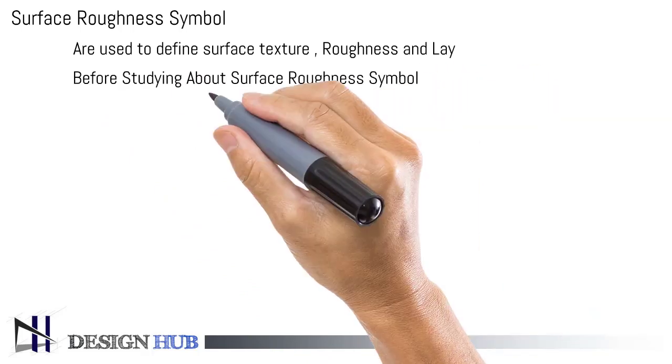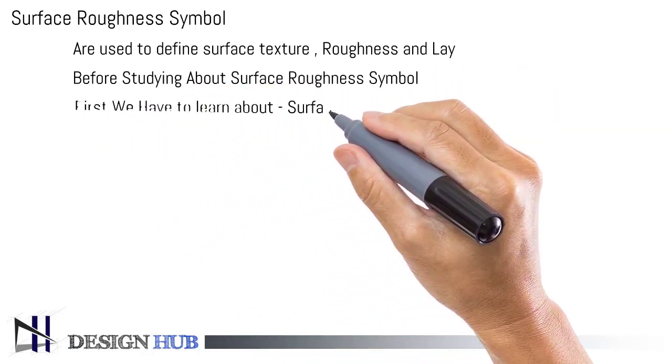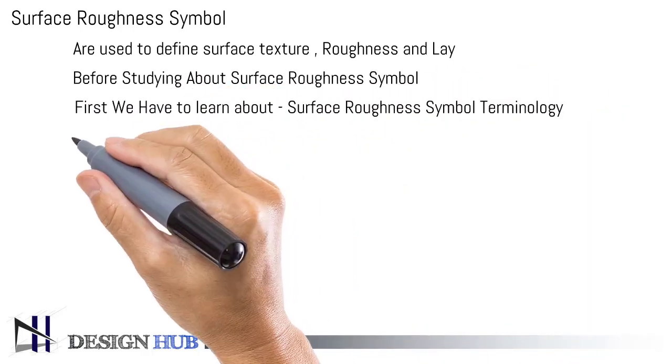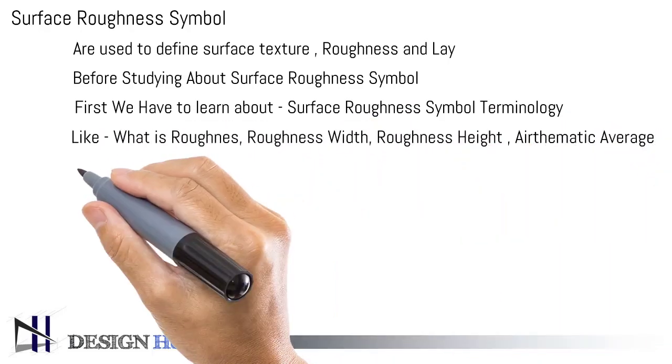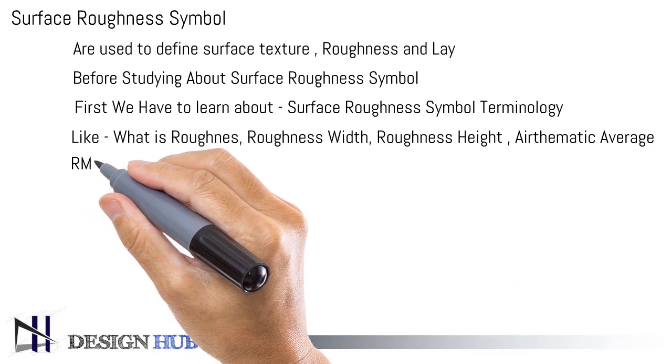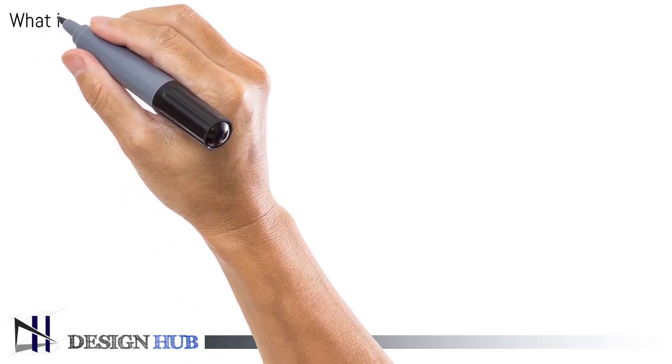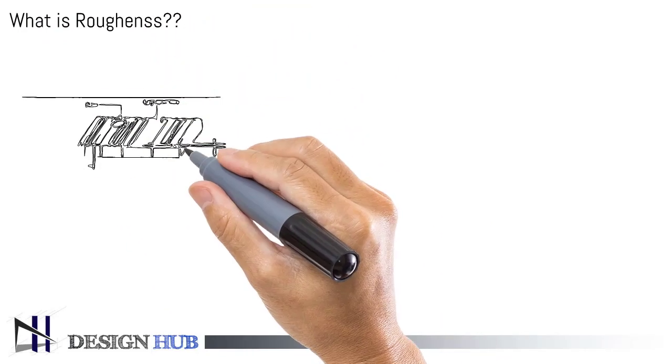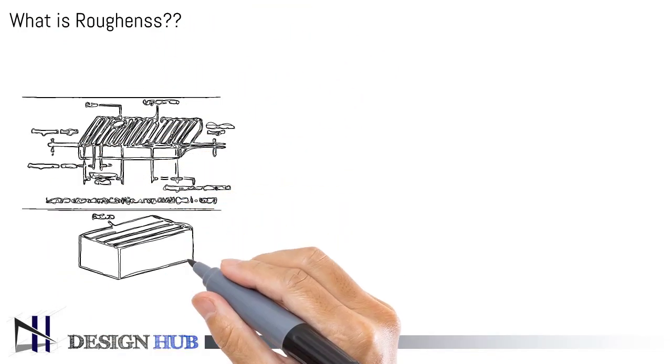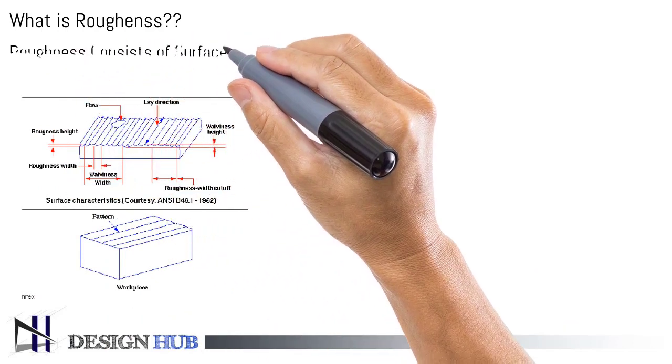But for proper understanding, we have to learn about surface roughness symbol terminology, like what is roughness, roughness width, roughness height, etc. Roughness consists of surface irregularities which result from various machining processes.